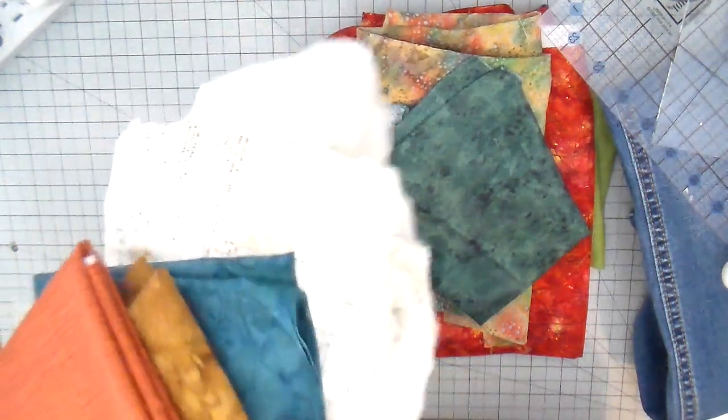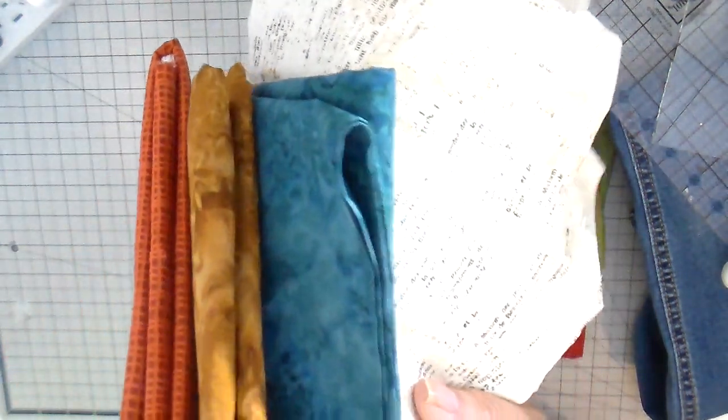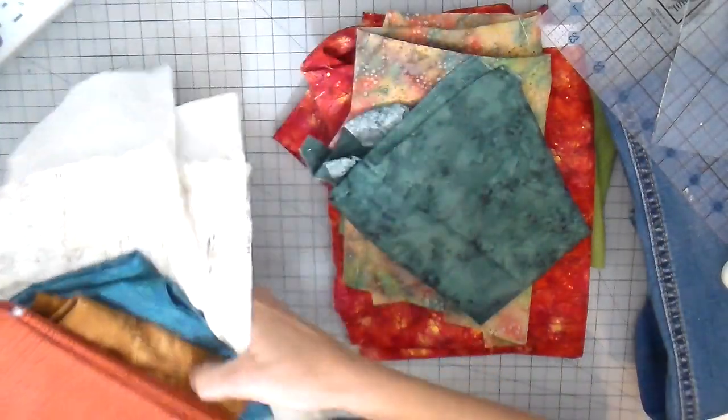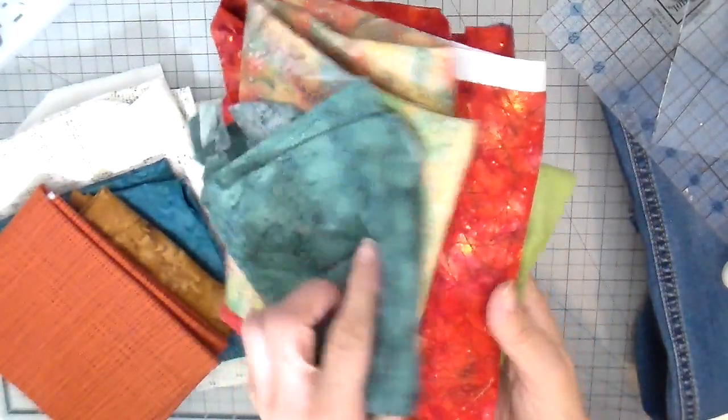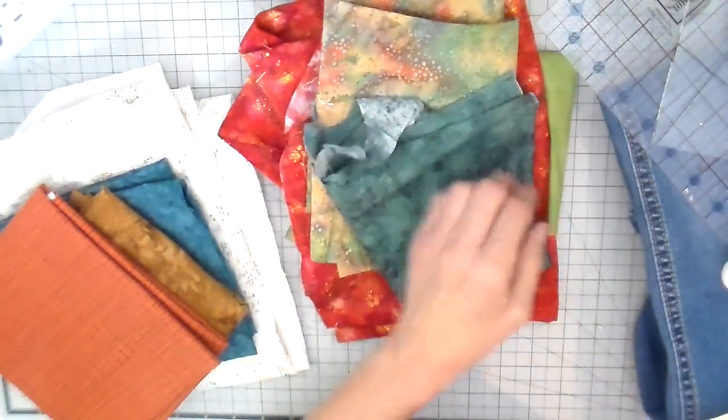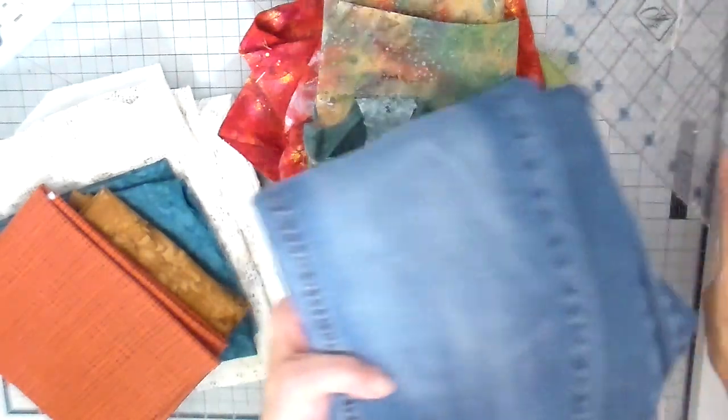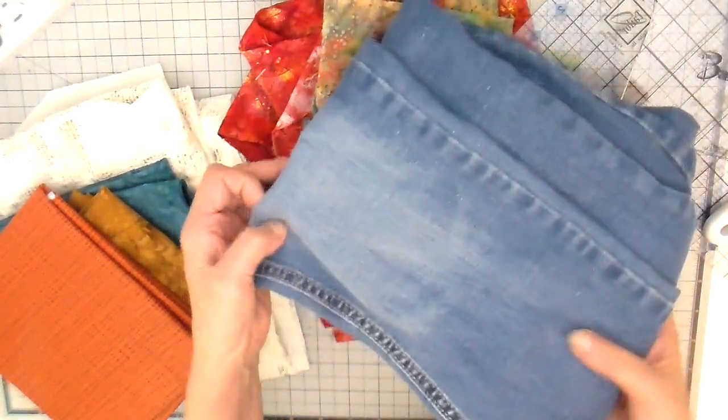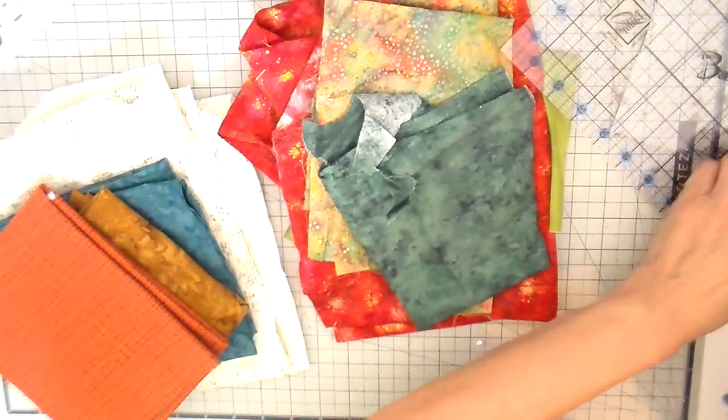I have some fabrics picked out for the top of my coasters, just using some fall tones and then also this interesting cream color that has a script on the top. We'll be adding some leaf appliques, and so I picked out some fabrics for that. The back of my coasters will be denim, and I'm using a pair of thrifted jeans for the back of the coasters.